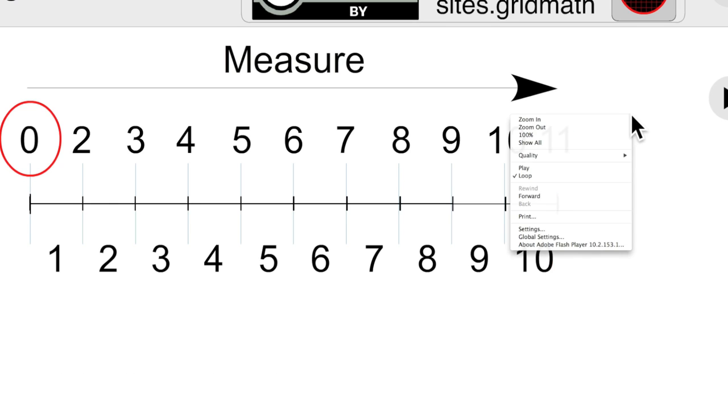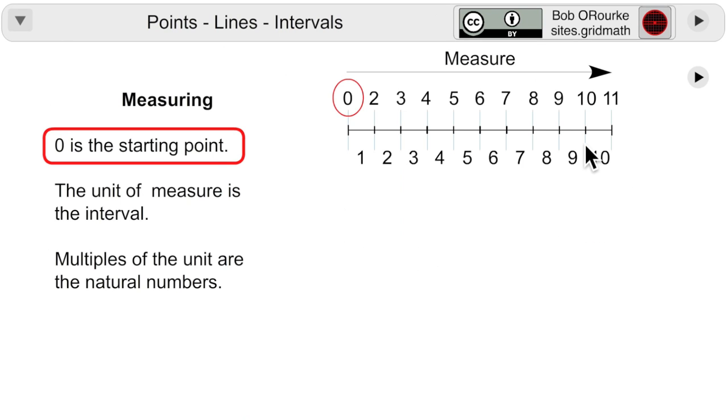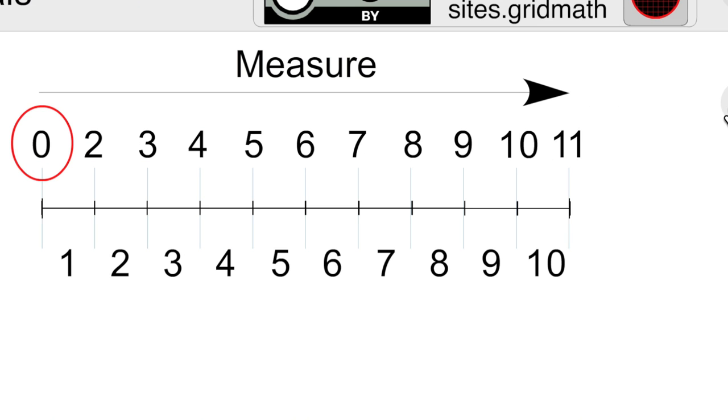And now when you measure something you normally start with a 0. So if you're going to measure the number of intervals, 0 is the starting point. Now the rest of the points have to be renamed accordingly and now they become a count of the number of intervals.